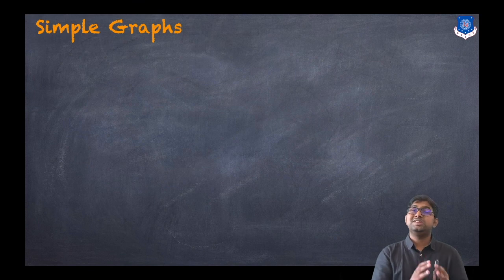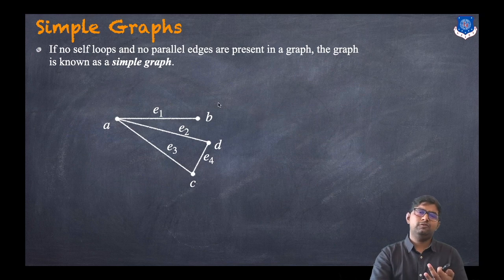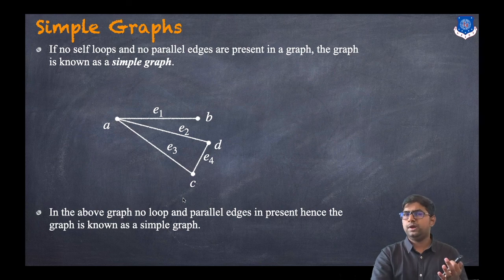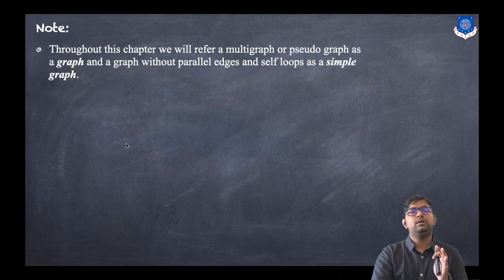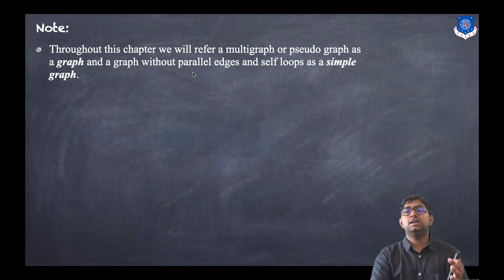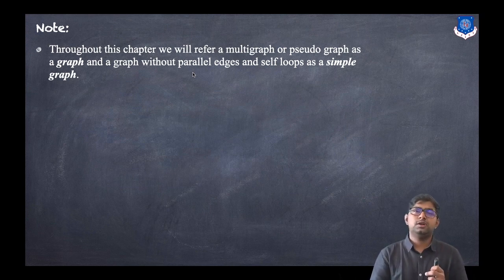Now let us discuss a simple graph. If no self-loops and no parallel edges are present, the graph is known as a simple graph. The example graph with no parallel edges and no self-loop is therefore a simple graph. Note: throughout this chapter, a multigraph or pseudograph will be referred to simply as a graph, while a graph with no parallel edges and no self-loops will be called a simple graph.